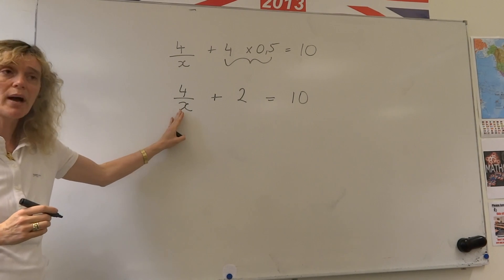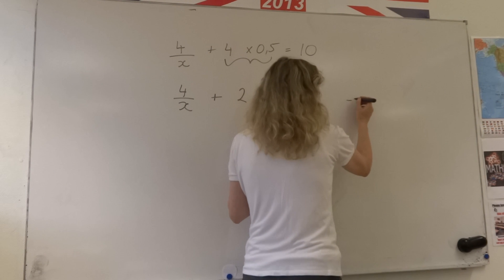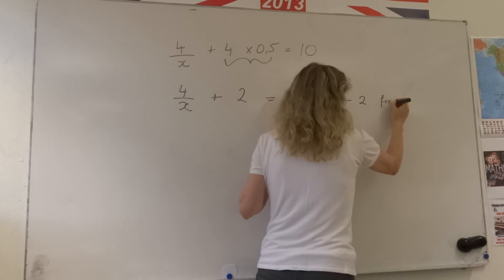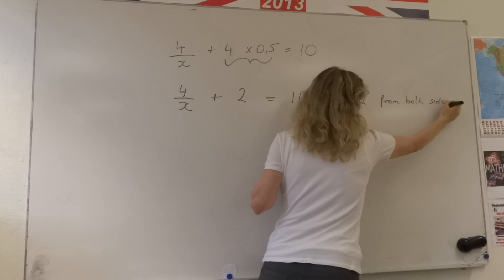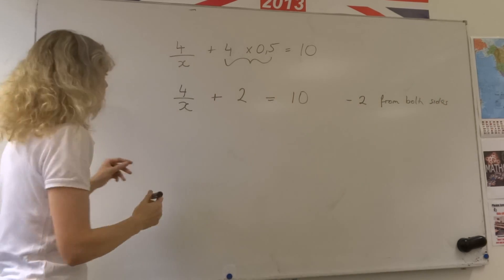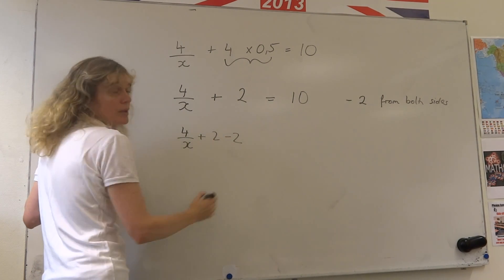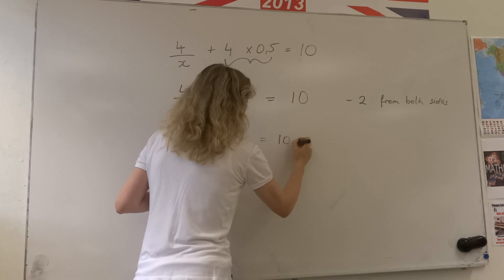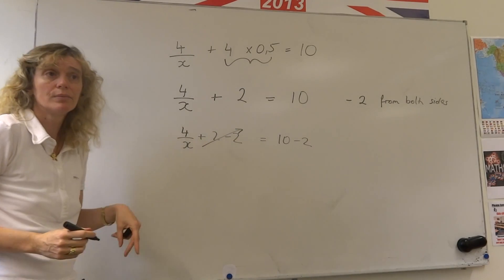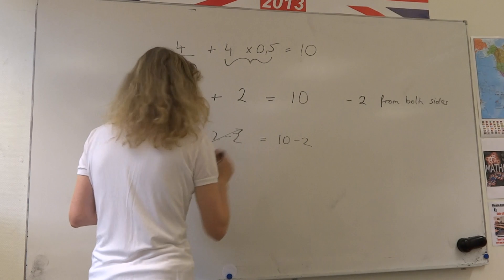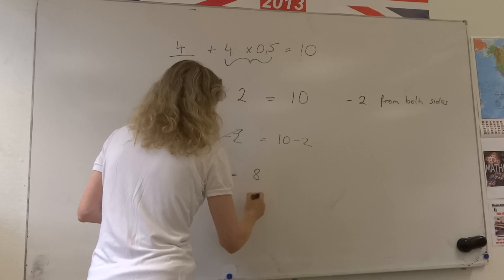Now I want to get the x's all by themselves. So what I would do now is I would do minus 2 from both sides. Whatever I do in my equation, I have to do the same thing to both sides. So here I'd get 4 divided by x plus 2 minus 2 equals 10 minus 2. The plus 2 minus 2 has now gone to 0, giving us 4 divided by x equals 8.